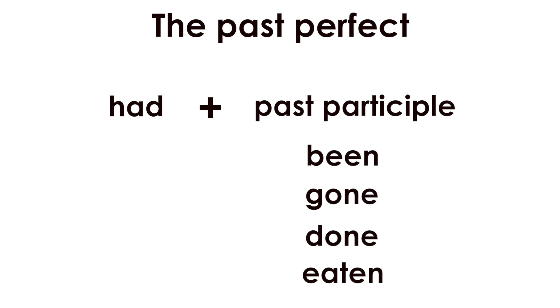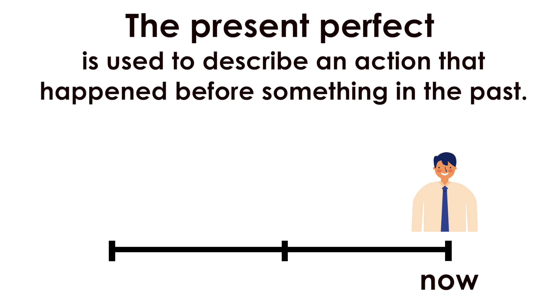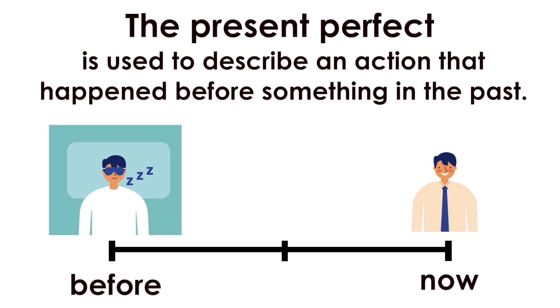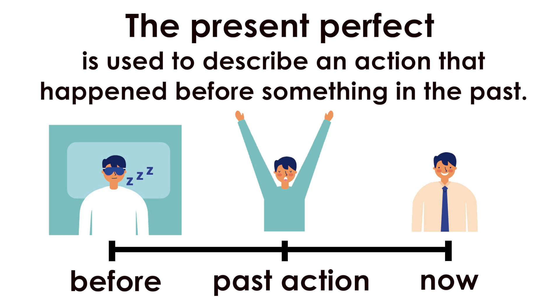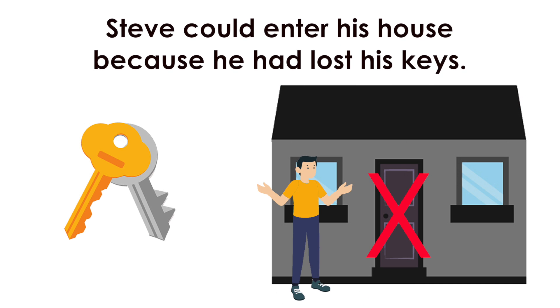The past perfect is used to describe an action that happened before something in the past. For example, Steve couldn't enter his house because he had lost his keys.